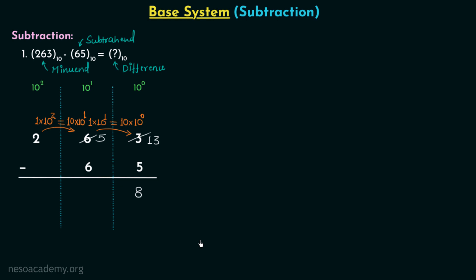From this we can draw a very important conclusion: whenever borrowing happens, the digit borrowing will get a value equal to the base of the number system. In the first case, when 3 borrowed from 6, it got the value 10, which is the base of the decimal number system. In the second case, when 5 borrowed from 2, it again got 10. So every time borrowing happens, the amount borrowed is equal to the base of the number system, and 1 will always be deducted from the digit giving the borrow.